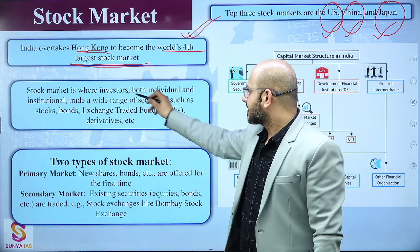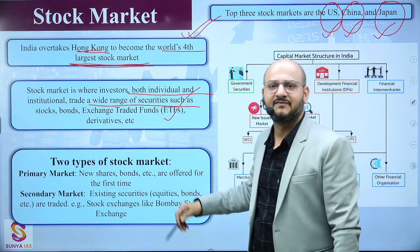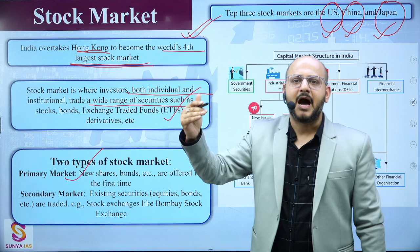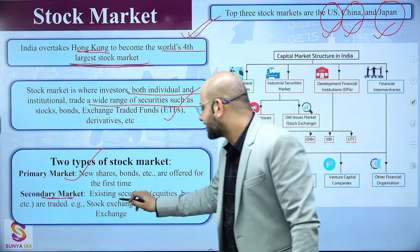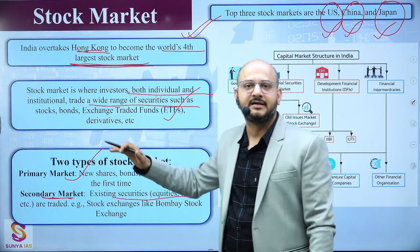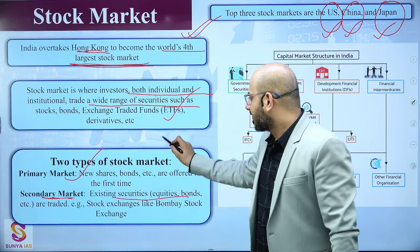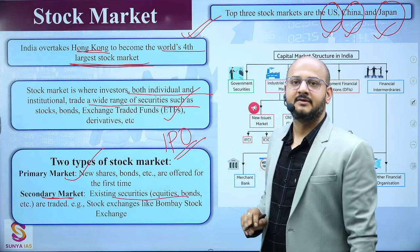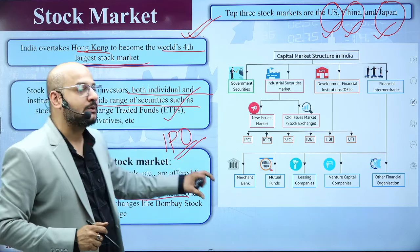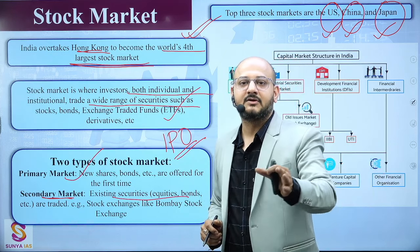Investors — both individuals and institutions — trade a wide range of securities such as stocks, bonds, exchange-traded funds, and derivatives. In the primary market, companies release IPOs for the first time. In the secondary market, existing securities that are already listed are traded based on increase or decrease in price. Sometimes companies do a second market offer when they want to dilute existing equities, increasing them into the market for common investors.